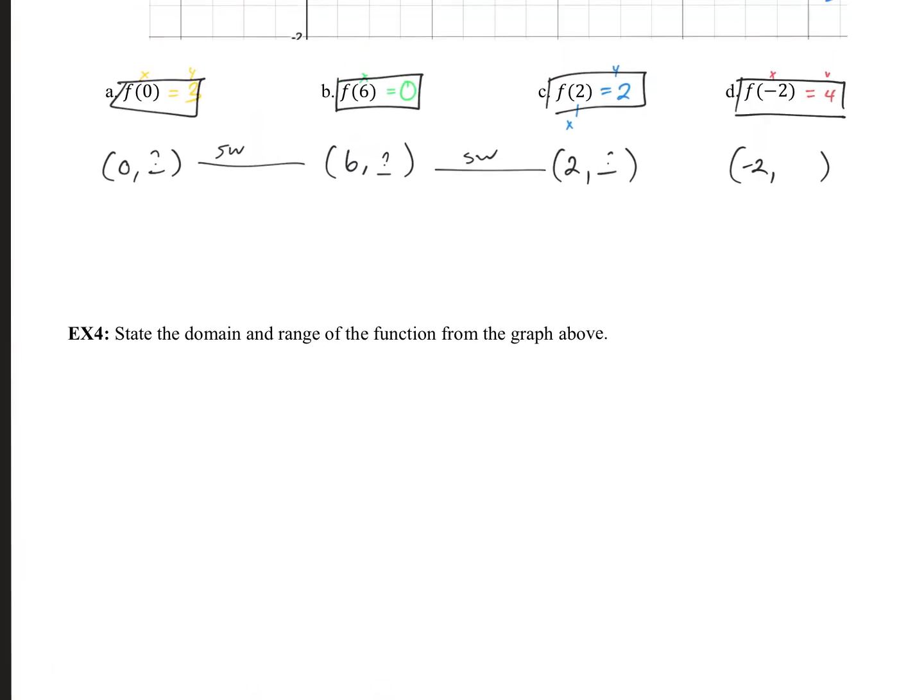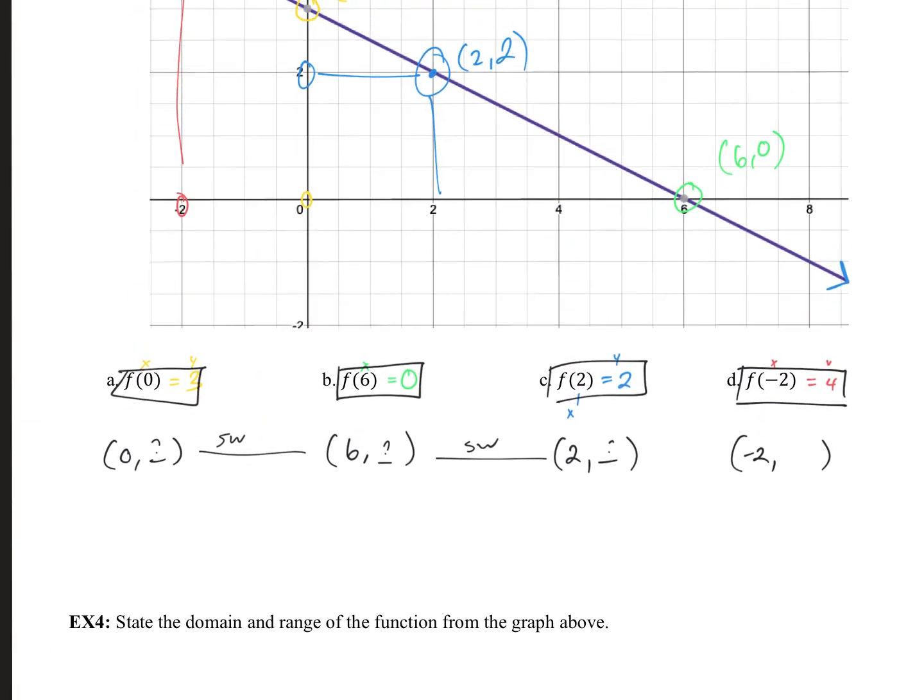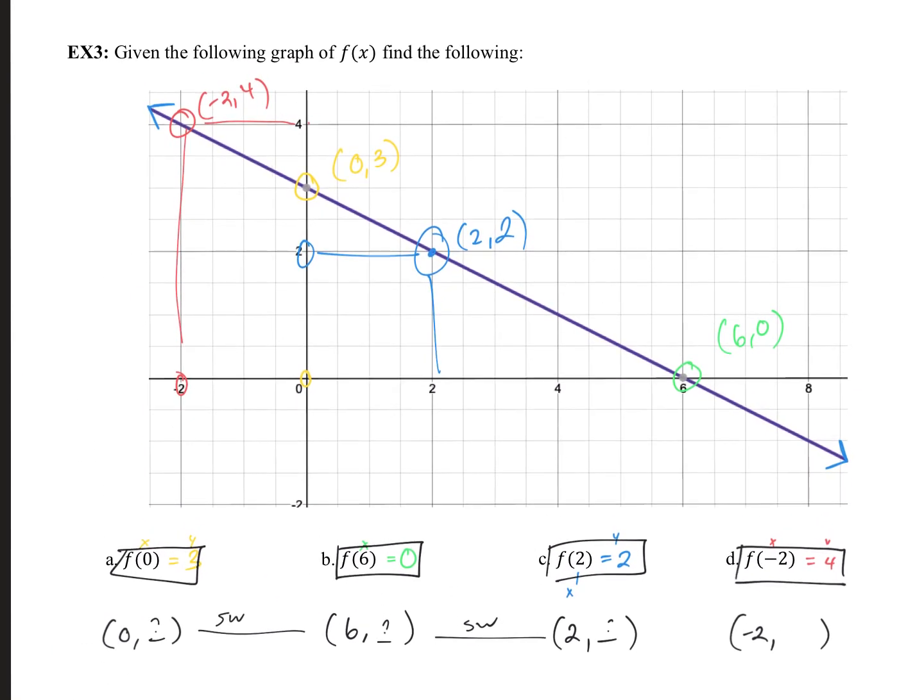Alright. Example 4. State the domain and range of the function from the graph above. So, what would the domain be? Well, the domain, all of the allowed x values, well, my line stretches out from, it goes on and on in that direction and on and on in that direction. So, that's going to be positive infinity and negative infinity. But, we have to be careful here. I'm given the function f of x.